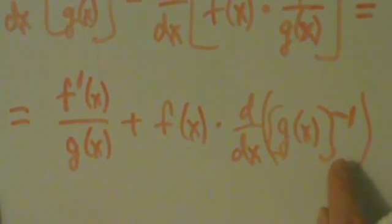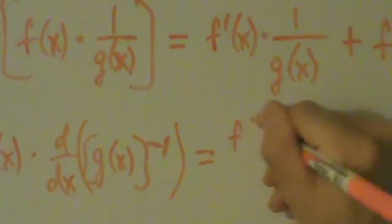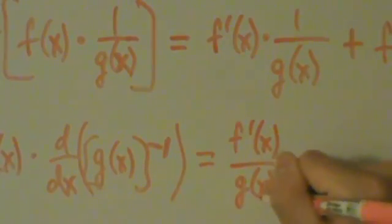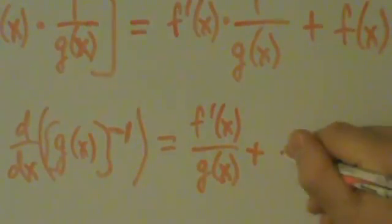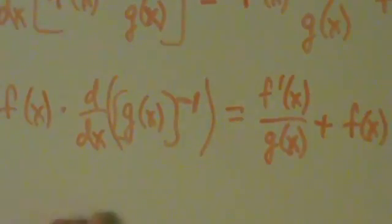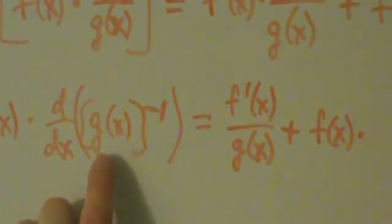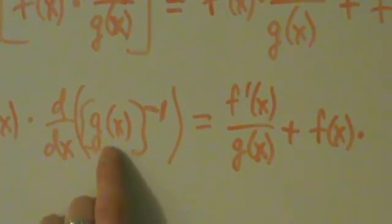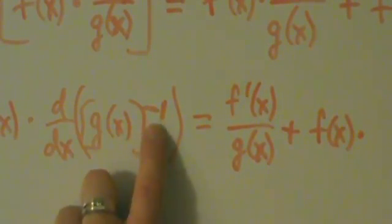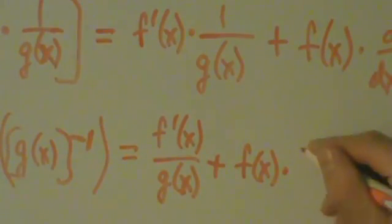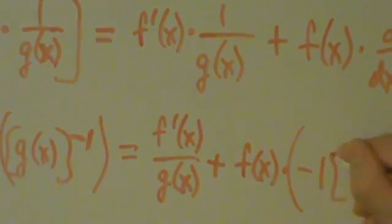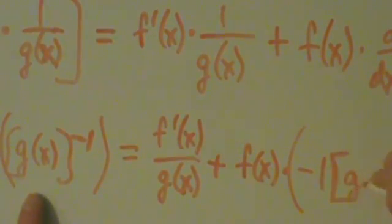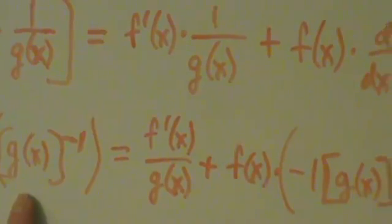Now we apply the chain rule to d/dx of g(x)^(-1). The 'little guy' is g(x) on the inside, and the 'big guy' is raising things to the negative first power on the outside. Chain rule says: take the derivative of the big guy — negative one times g(x)^(-2) — evaluated at the little guy, and then multiply by the derivative of the little guy, g'(x).